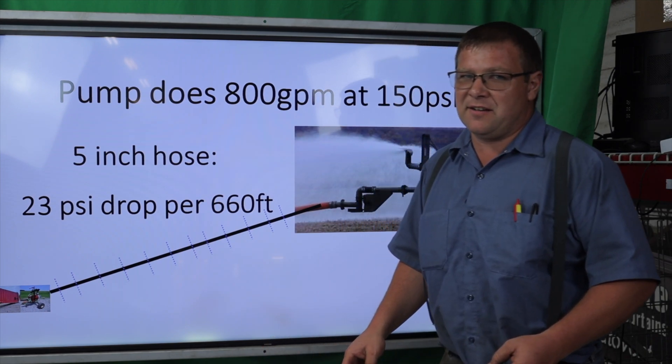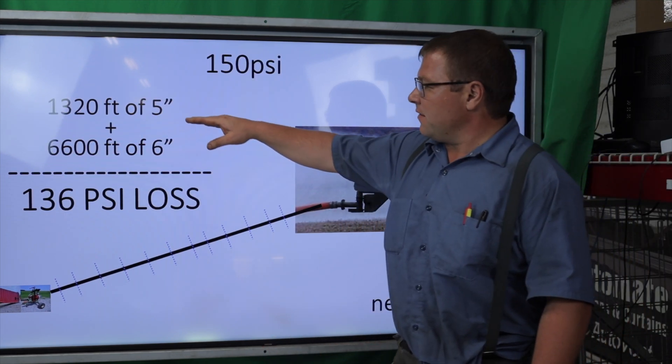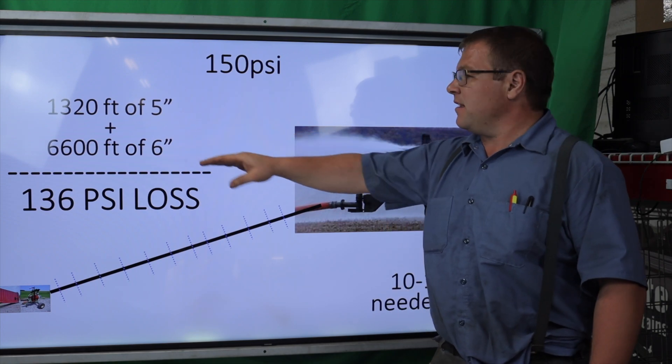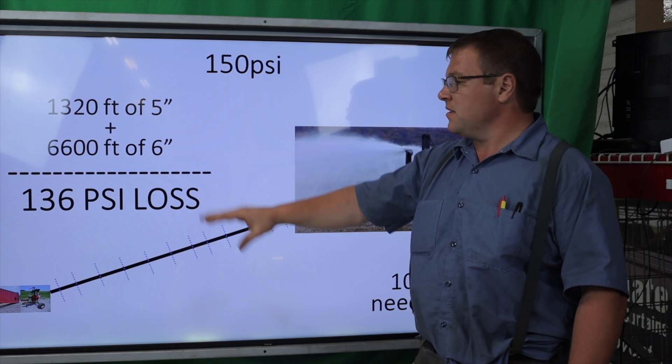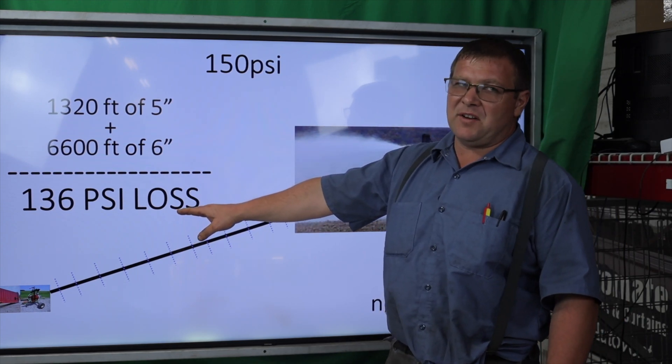You don't want more five inch drag hose than you need. If we have 1,320 feet of five inch drag and 6,600 feet of six inch supply, that's a mile and a half of hose total, giving us 136 PSI of loss.